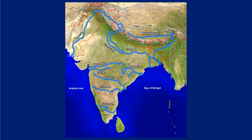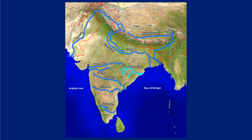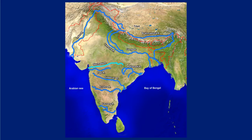Depending upon the origin of rivers, two broad drainage systems of India are generally recognized: the Himalayan rivers, including the Indus, the Ganga, the Brahmaputra and their tributaries, and the peninsular rivers such as Mahanadi, the Godavari, the Krishna, the Tapi, the Narmada and the Kaveri.